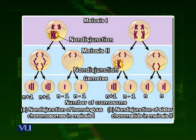Now, if you compare both of these non-disjunctions — non-disjunction in meiosis I and non-disjunction in meiosis II — we can see that the non-disjunction in meiosis I is more dangerous, because the result is that all four gametes have an abnormal number of chromosomes.